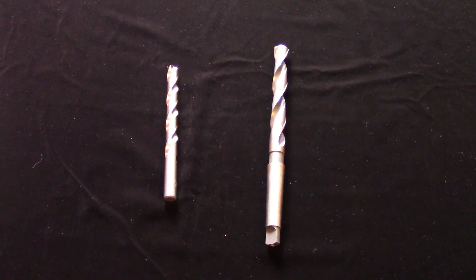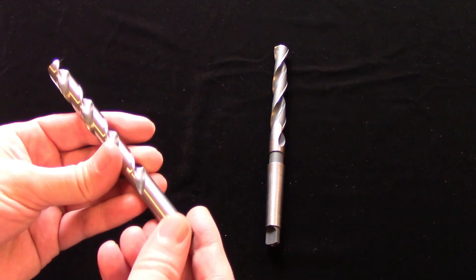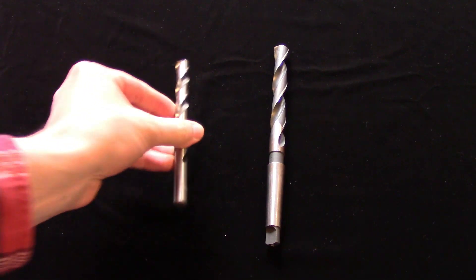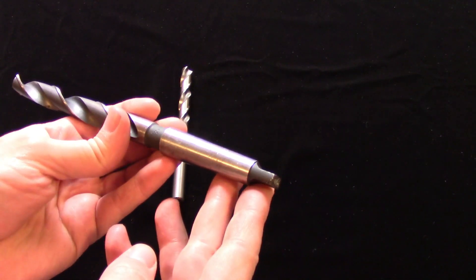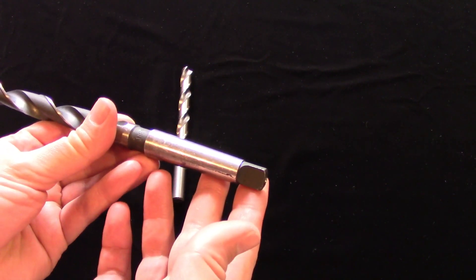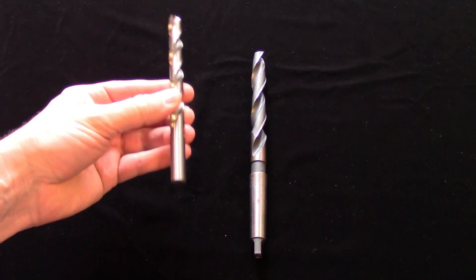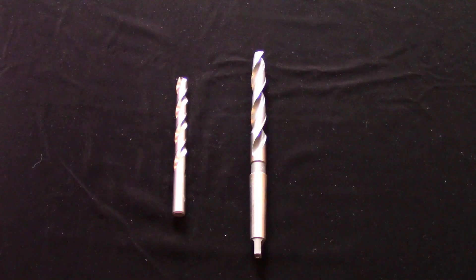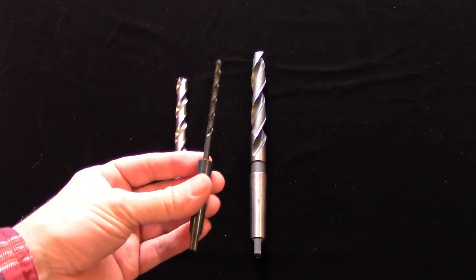The type of shank is also a consideration. Straight shank bits are meant to be held in a drill chuck or a collet, while taper shank drills are held directly in the lathe tailstock or the drill press spindle by the Morse taper shank. Straight shank bits are more common and considerably cheaper, but taper shank drills offer a very rigid way of holding drills of all sizes directly in the machine tool.